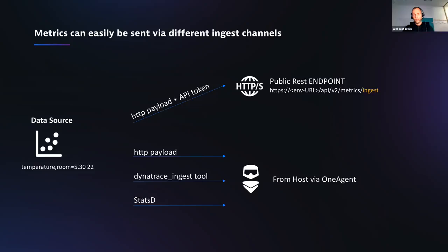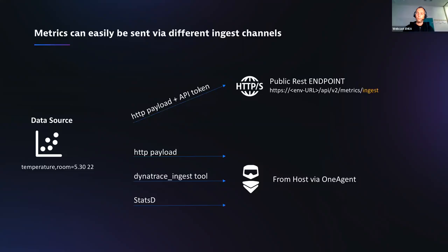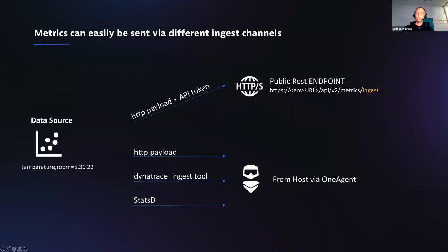Telegraf is also similar to StatsD in how it works. Telegraf is an agent — it's not something Dynatrace provides, it's an open source project. What we did was code an output plugin. Telegraf consists of input plugins that gather data from various sources — about 200 different technologies including message queues — and output plugins. One output plugin you'll find on the Telegraf website is called the Dynatrace output plugin. That's a one-line configuration thing, and then Telegraf has the capability to send metrics to Dynatrace either via the OneAgent ingest channel or via the public API.